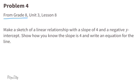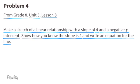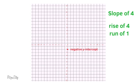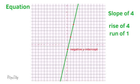Problem number 4, from 8th grade, Unit 3, Lesson 8. Make a sketch of a linear relationship with a slope of 4 and a negative y-intercept. Show how you know the slope is 4, and write an equation for the line. The first thing I'll do is put a point somewhere on the y-axis but below the x-axis, so I know it will have a negative y-intercept. I can start at this point and move up 4 units and to the right 1 unit, because it has a slope of 4 — a rise of 4 units and a run to the right of 1 unit. I can use these points to sketch a line. Here's a look at a line that has a slope of 4 and a negative y-intercept. The equation I wrote is y equals 4x minus 2.